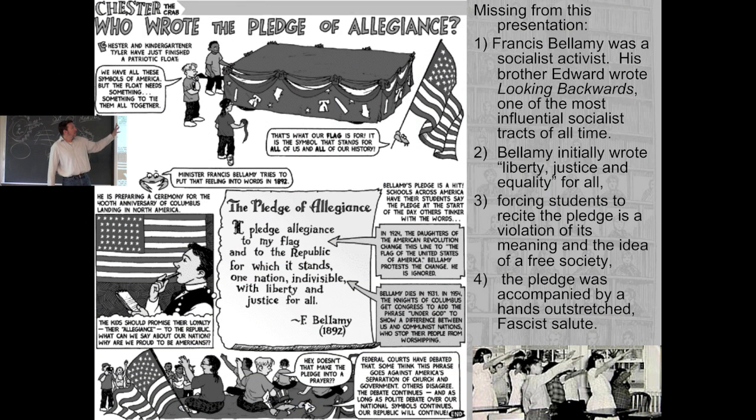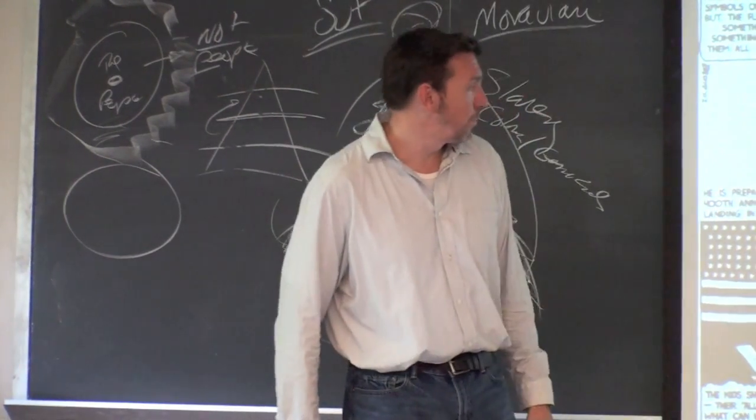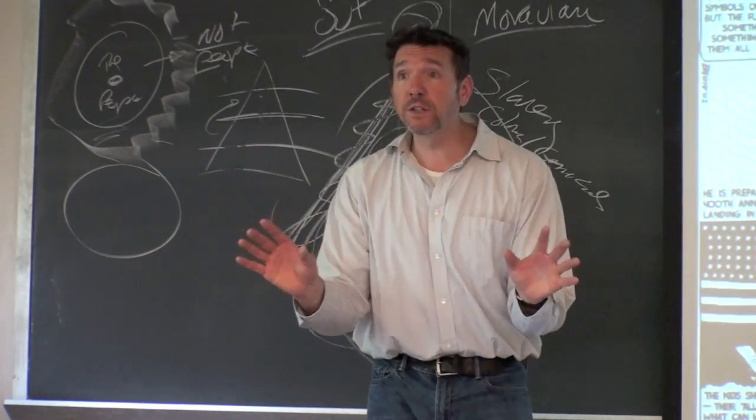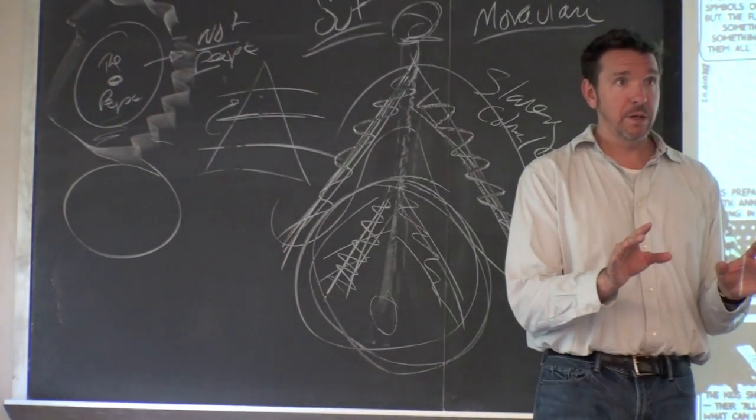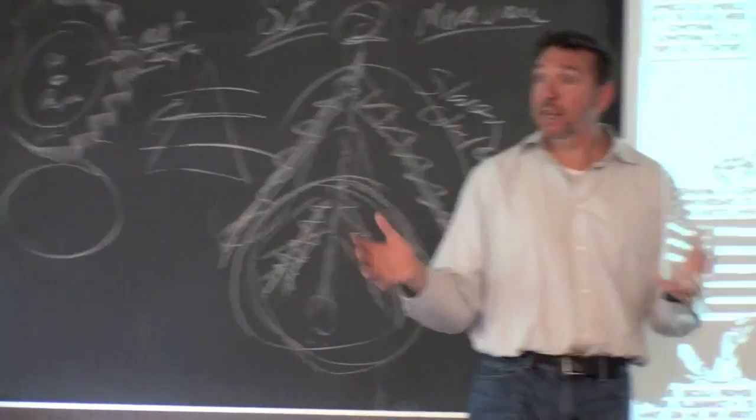Critically, Francis Bellamy was a socialist activist. His brother wrote Looking Backwards, the book that triggered Thorsten Veblen to become a sociologist. Francis Bellamy is the author of the Pledge of Allegiance. Here is what it originally said: I pledge allegiance to my flag and to the republic for which it stands, one nation, indivisible, with liberty, justice, and then originally, and equality for all. You initially wrote liberty, justice, and equality for all. The equality part was removed because it's too anti-American to have the statement of equality, certainly too socialist to have that as a goal. Liberty and justice we care about but not equality.